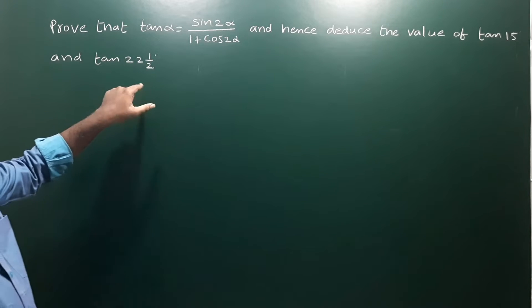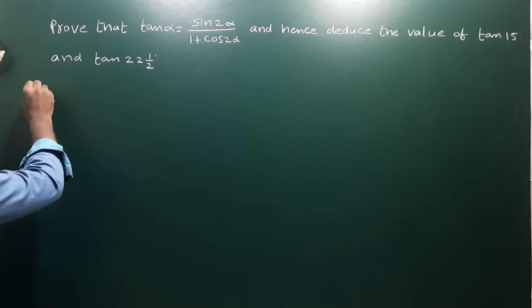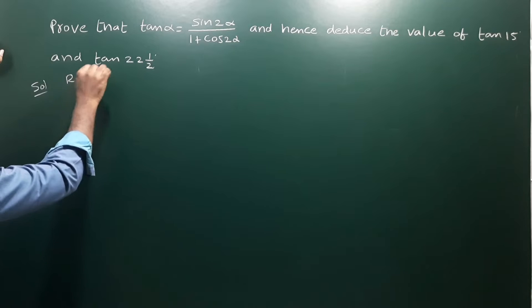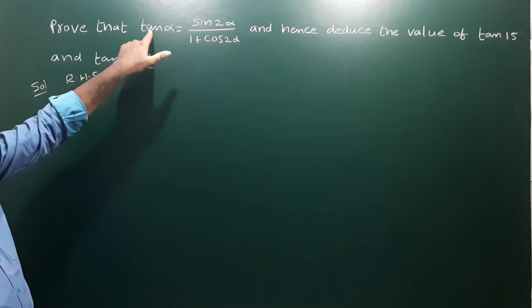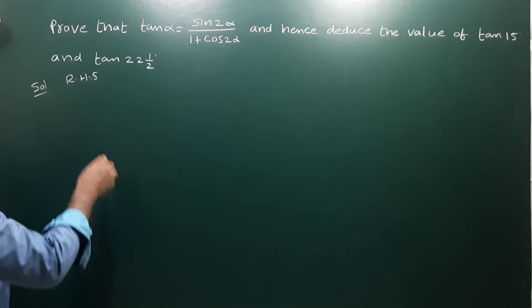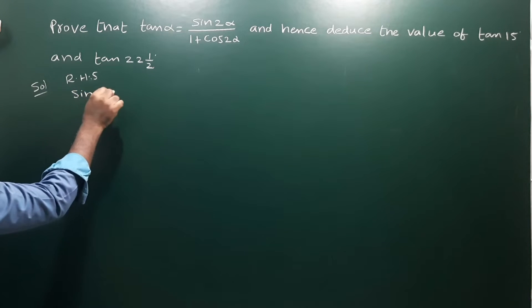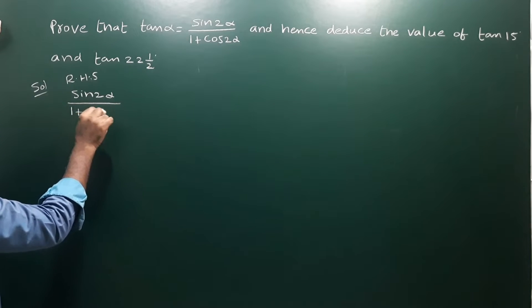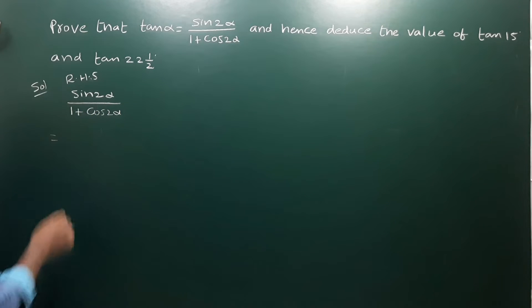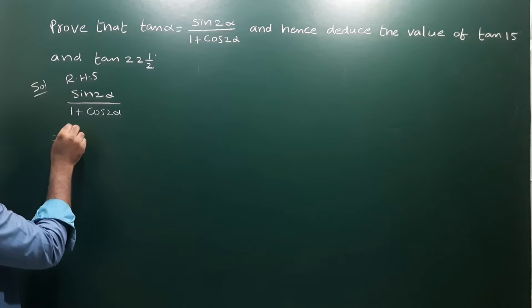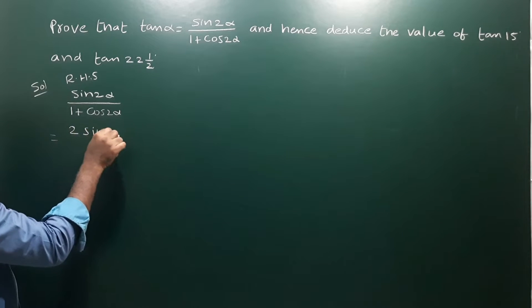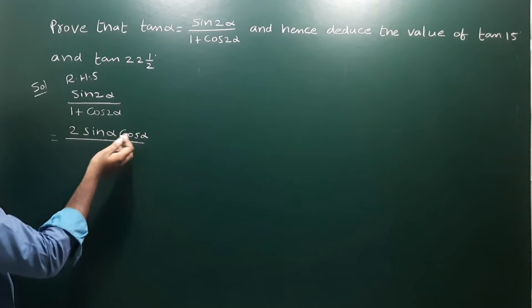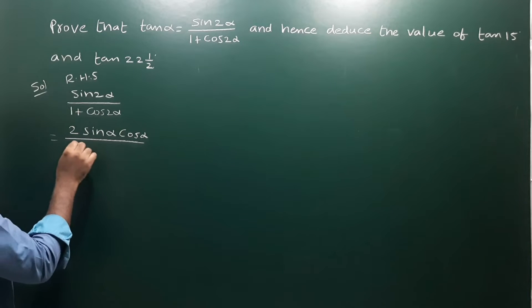Let us take the RHS, which is sin 2α by (1 + cos 2α). Now sin 2α means we have the formula 2 sin α cos α.